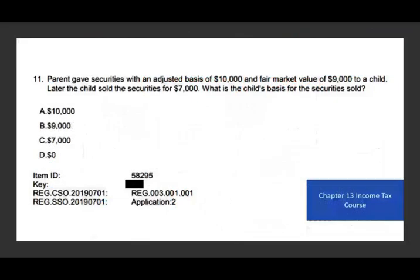Take a look at the first question. A parent gave securities with an adjusted basis of $10,000 and a fair market value of $9,000 to a child. Later, the child sold the securities for $7,000. What is the child's basis for the securities? So the parent gave it to the child. The parent had a basis of $10,000, and when they gave it to the child, it was worth $9,000.